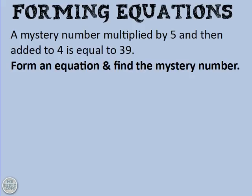So time to get your notebooks and pencils ready. Let's begin with the first of four examples. A mystery number multiplied by 5 and then added to 4 is equal to 39. Form an equation and find the mystery number.